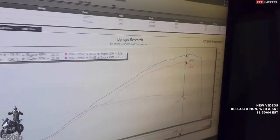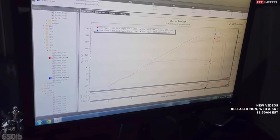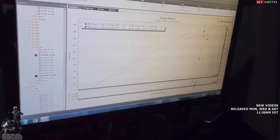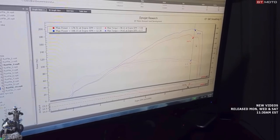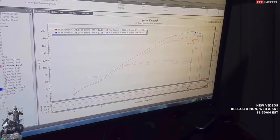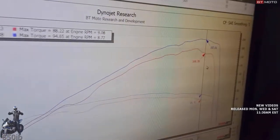You only have a 20 horsepower gain at peak, which is what people focus on. But let's talk about this throttle closure dip that these bikes have. You now have a 30 horsepower gain at 13,000 RPMs. Look at that - that's massive.